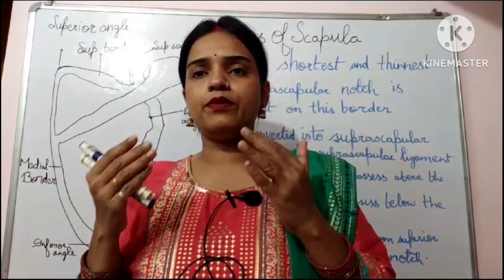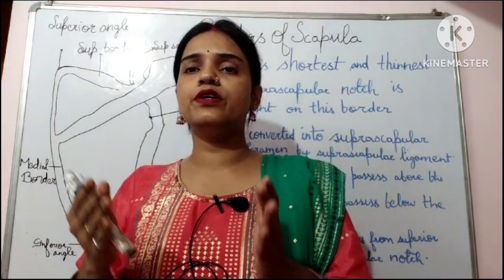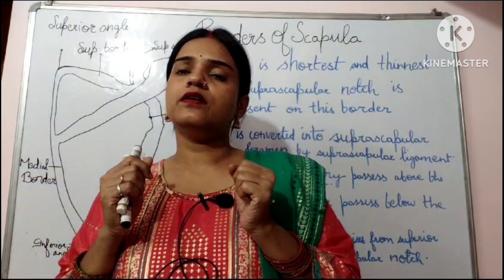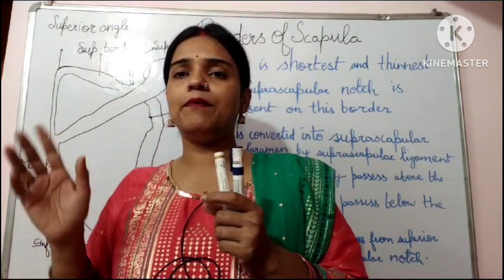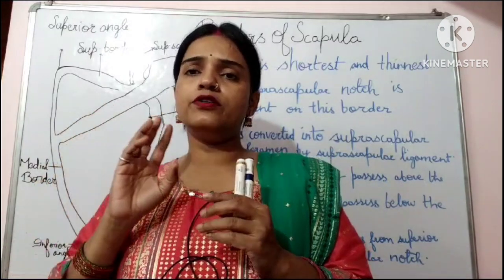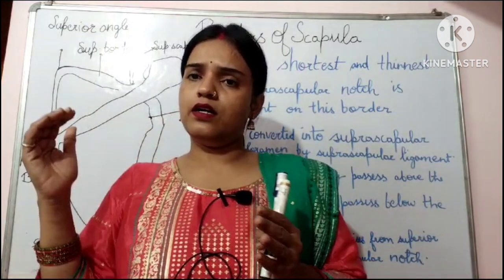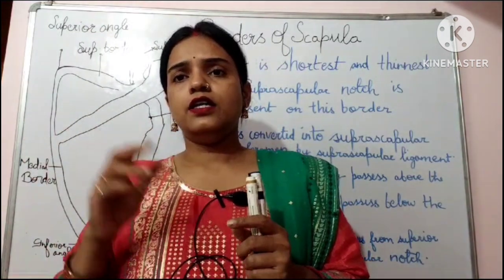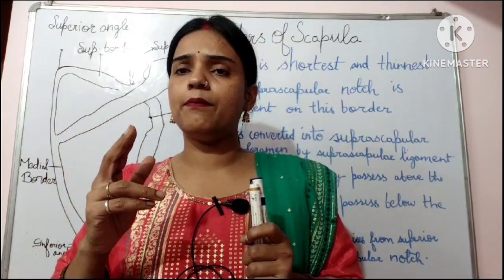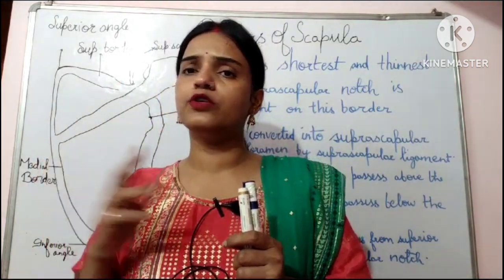You can see a supra-scapular notch here, located on the superior border. This supra-scapular notch is converted into a supra-scapular foramen by the supra-scapular ligament. The supra-scapular ligament bridges the two borders of the supra-scapular notch and it acts as a passage for nerves and arteries.